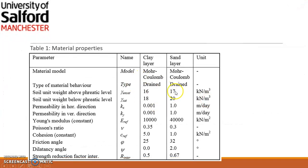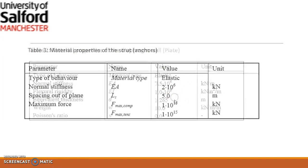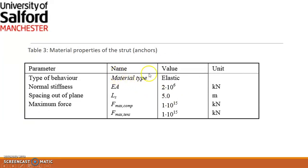Table one shows the material properties we are going to input for our clay and sand. The diaphragm wall is going to be modeled using a plate with elastic material properties. Bear in mind that you would have obtained some of these properties in the laboratory. Our strut is going to be modeled using an anchor — note that 'elastic' shown there is a mistake, which will be clarified when we input the values.